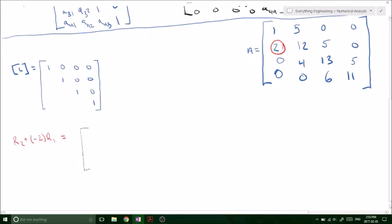So this gives us this top row remains unchanged. And now we have a 0. And 12 plus negative 10 gives us 2, 5, 0. And the other rows remain unchanged.